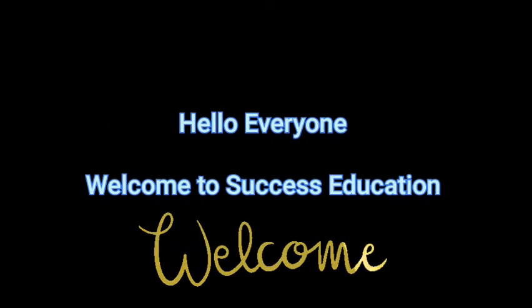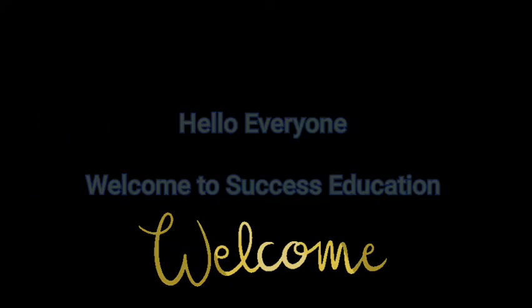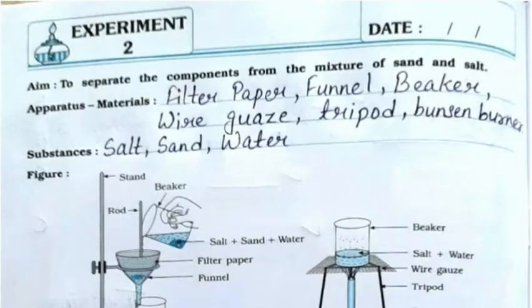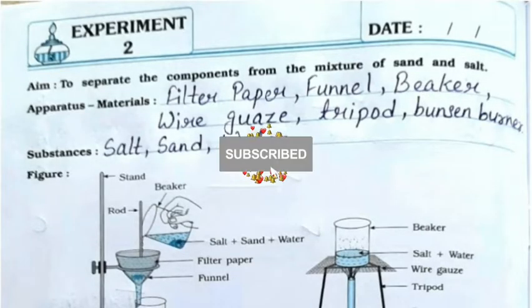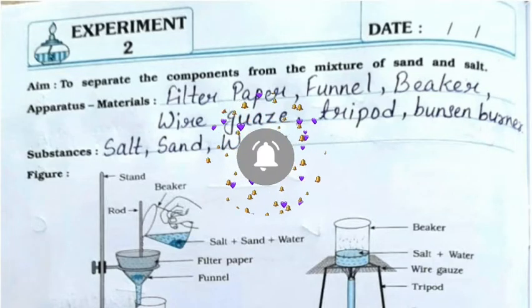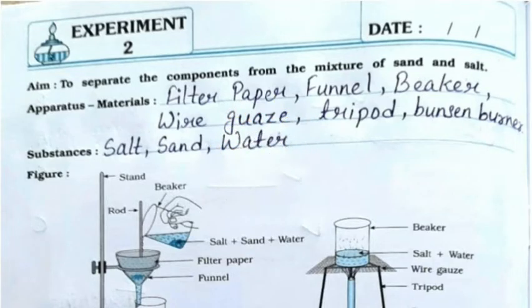Hello everyone, welcome to Success Education. In this video we will do the solution for the Science Journal for Standard 6, Experiment Number 2. The aim is to separate the components from a mixture of sand and salt. Please subscribe to the channel for more videos.